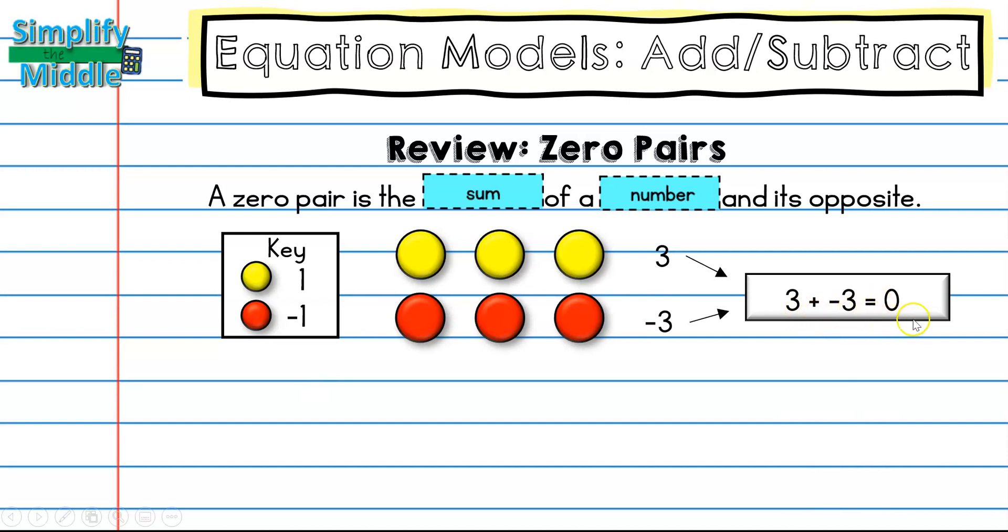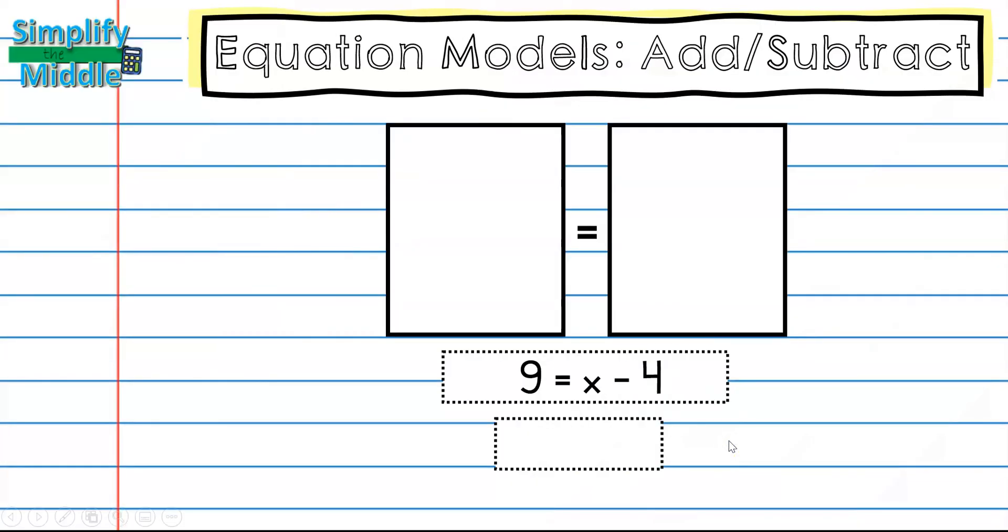This will be important when we're solving equations. So here we have our equation mat and we have a key over here that shows us that this represents negative x, the green represents positive x, the small red represents negative 1, and yellow represents positive 1.